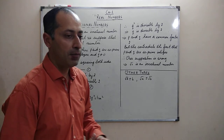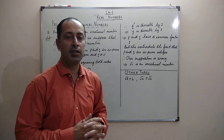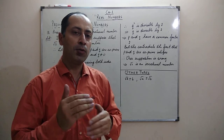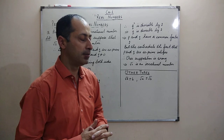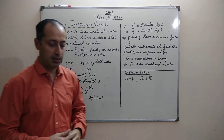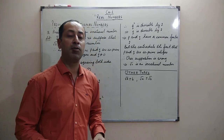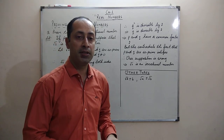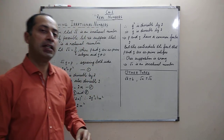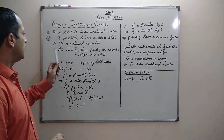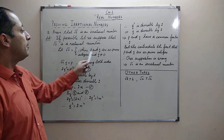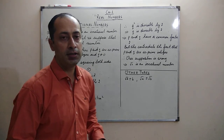We are proving this using the contradiction method. In the beginning we will suppose something, then prove that what we supposed is wrong. So if possible, let us suppose that root 2 is a rational number. Rational numbers are those which can be written in the form p by q. Therefore root 2 equals p by q, where p and q are co-prime integers and q is not equal to 0.